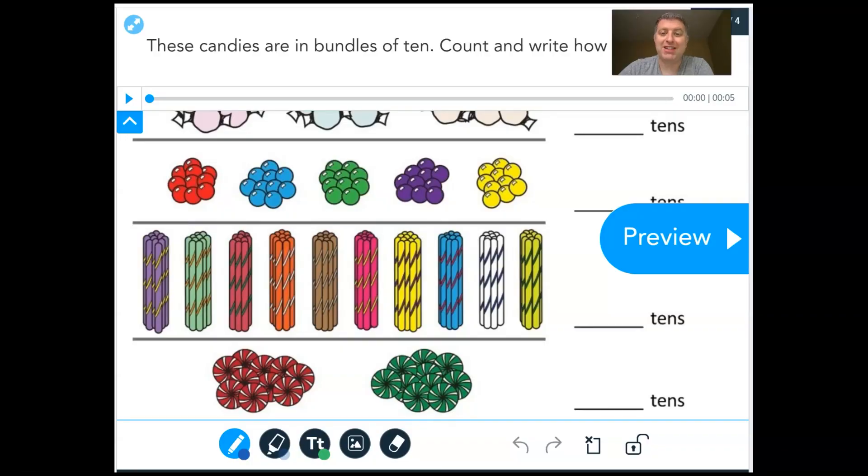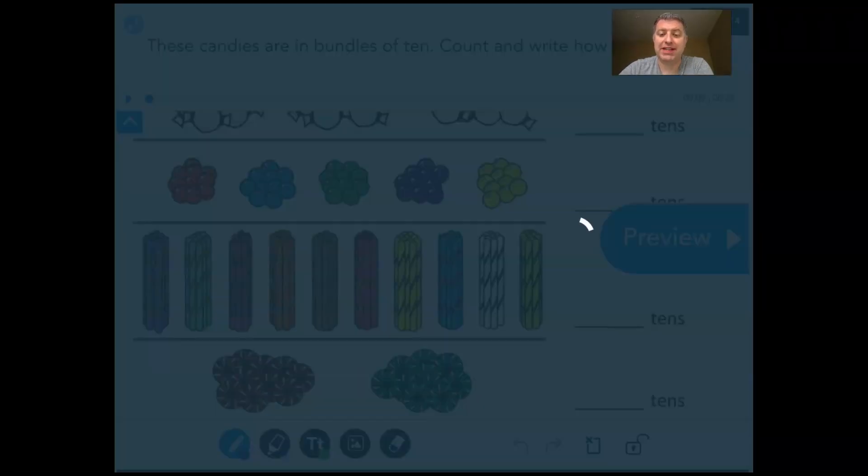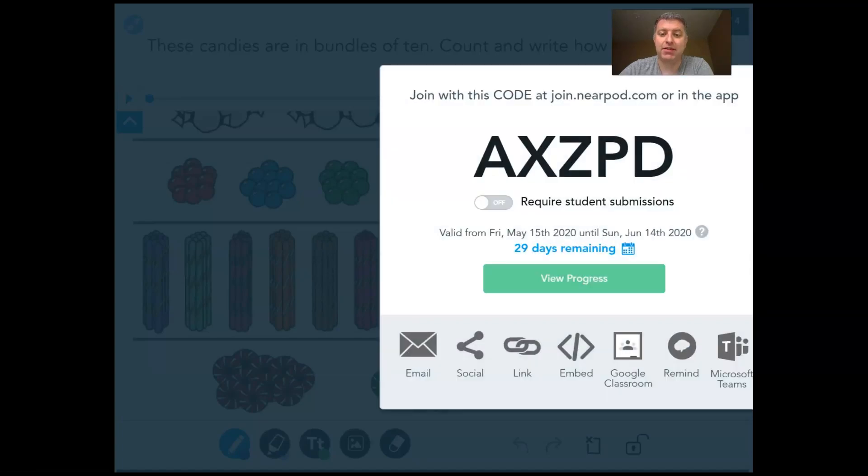You can practice counting by tens more with the video that I posted on kinderalliance.org. You can also make flashcards of the tens. It's really important that we learn to name and recognize those tens on that 100 chart because it'll help us name all of the other numbers on there. All right, friends, if you are my Nearpod friend, hop on Nearpod. You can click the link below this video. It will take you straight to the lesson. If you're using the app and you need to find the lesson, you can use this code, A-X-Z-P-D.